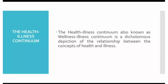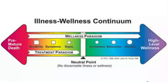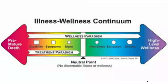The health illness continuum, also known as the wellness illness continuum, is a dichotomous depiction of the relationship between health and illness. On one side is premature death and on the other side is high-level wellness, with a neutral point at the center where one cannot determine whether the person is in illness or wellness.